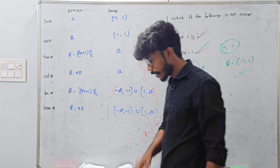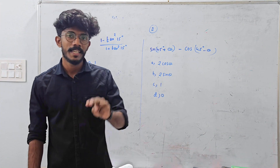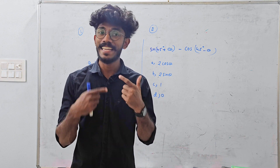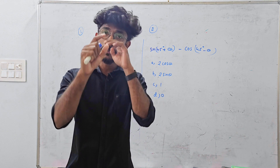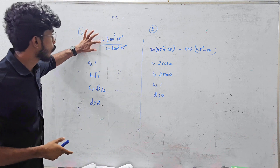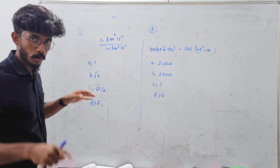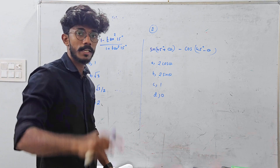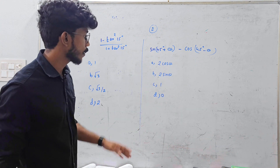Is it clear? Okay. Next, I want to do two questions. I want to give you a hint — if you have the concept, I want to give it to you. This question is: 1 minus tan squared 15 divided by 1 plus tan squared 15. What is this value? Comment your answer — A, B, or C.